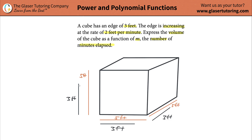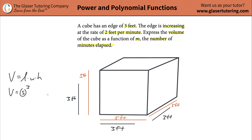What's the volume of the cube at the start, before it starts expanding? The volume of any rectangular shape is going to be length times width times height. Since we're dealing with a cube, you can simplify this to just side cubed, because the length, width, and height are all the same. The length of the side here at the start is three feet, so three cubed is 27 — that's 27 cubic feet.